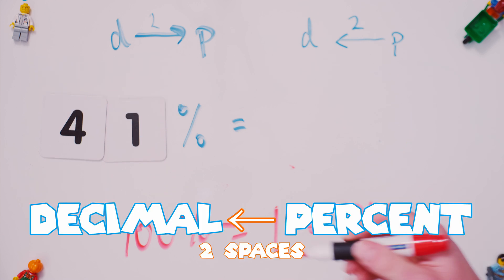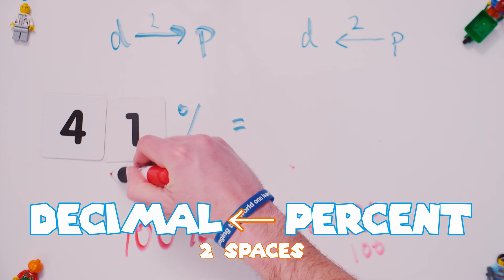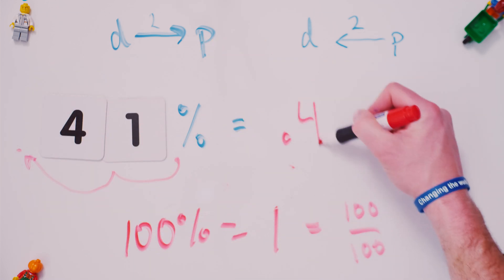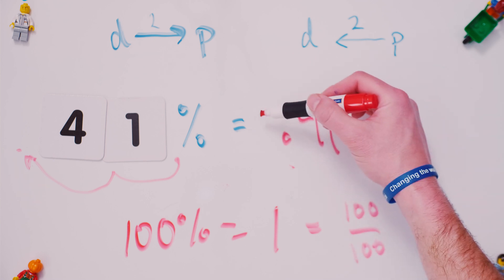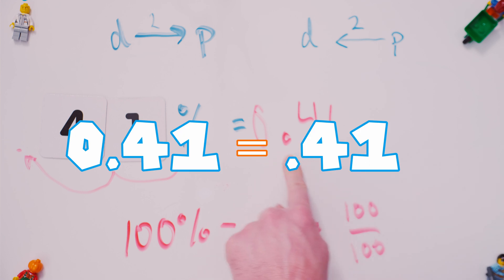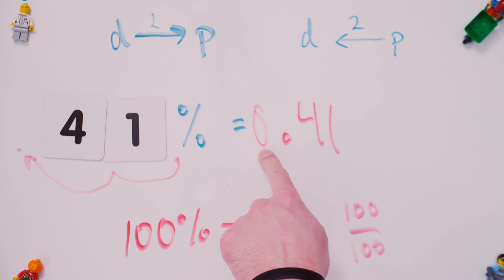Okay, so let's go backwards two spaces. One, two. This is now point four one. And if you are in medicine, then you definitely want to add a zero there to reinforce where that point actually goes. 41% is point 41.